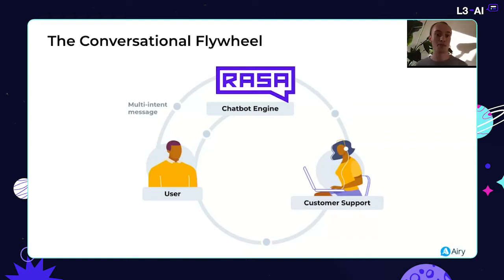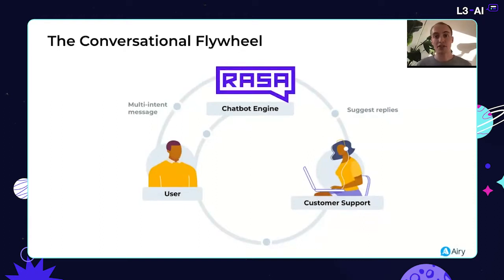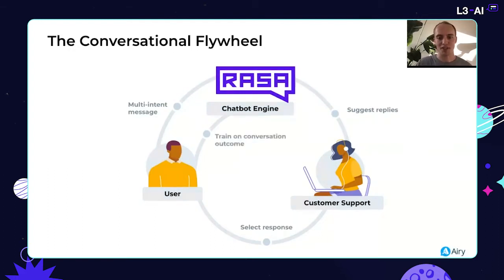That is the conversational flywheel. Here's how it works: first, the user writes a multi-intent message. The chatbot engine understands it cannot handle this, but instead of simply calling the agent and calling it a day, the chatbot engine will suggest replies to customer support. It says: I don't know which intent is the correct one, but I'm going to suggest the responses I would have sent for any of those intents, and suggest them as replies to customer support. Then support simply selects a response, sends it to the user, and the conversation continues. Now you have labeled data, and you can retrain your chatbot engine on this labeled data.